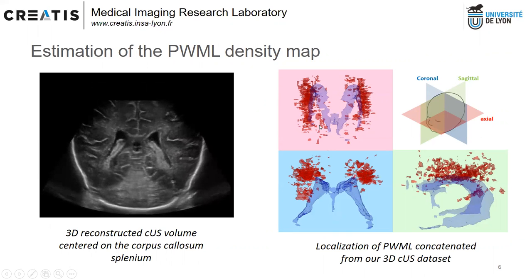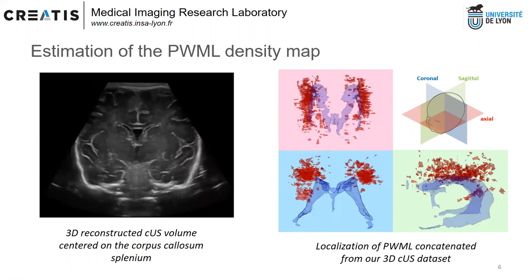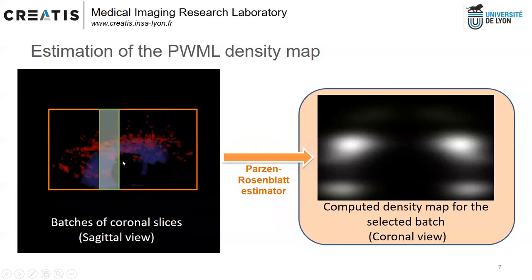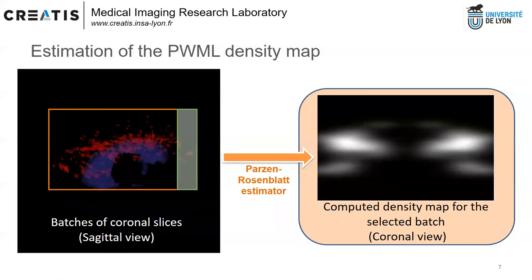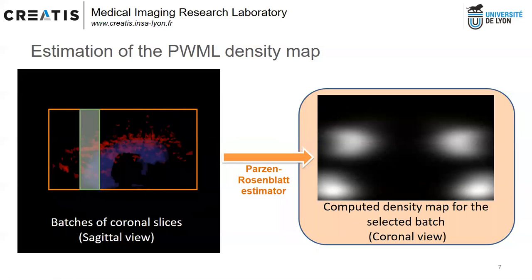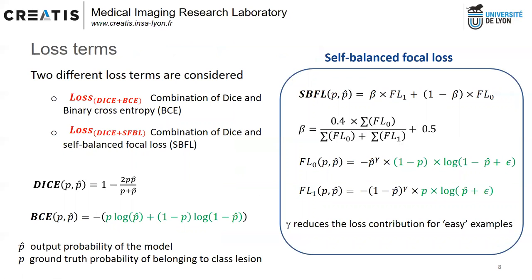Our goal is to make our network focus its attention on this area. To do this, we compute the density of our lesional volume from our training dataset using a Parzen-Rosenblatt estimator on small batches of slices sliding through the 3D volumes. We also evaluate the influence of SBFL, which is similar to the focal loss introduced by Lin, based on cross-entropy terms associated with a mechanism to downweight easy samples and a weighting factor beta that evolves during training.